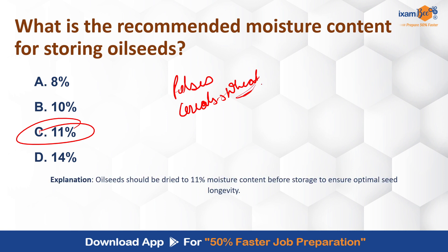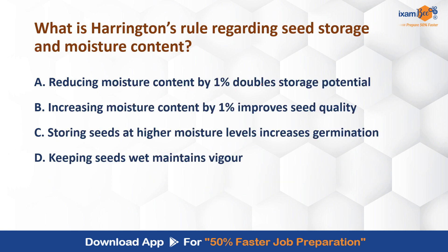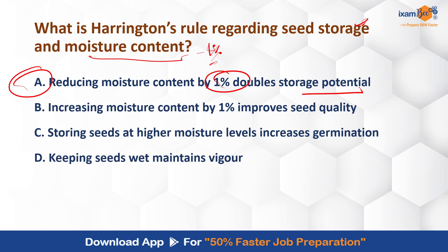Harrington's rule for seeds states: every one percent decrease in moisture content doubles the seed longevity, and reducing moisture content by one percent also affects germination. This is the key rule relating moisture content to seed storage life.